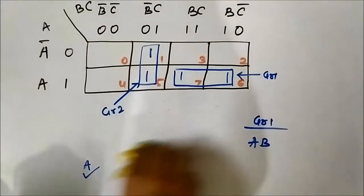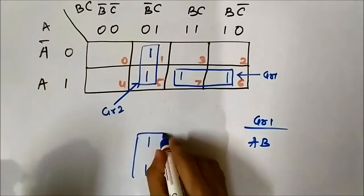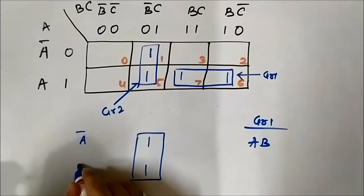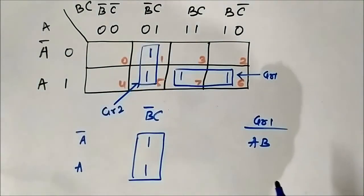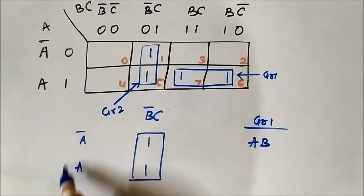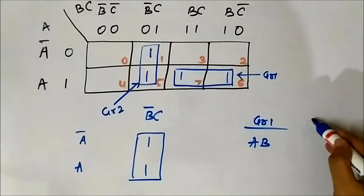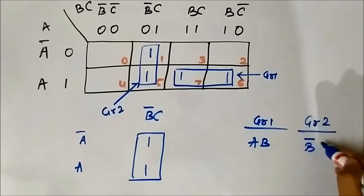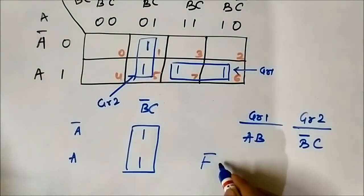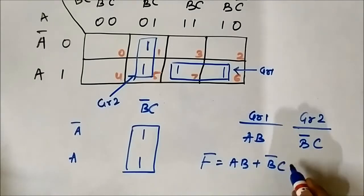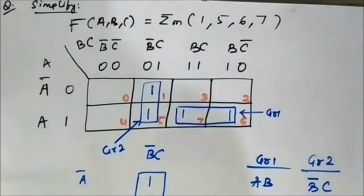Then we have Group 2. In Group 2 we have A complement and A in the horizontal side — nothing common horizontally. But in the vertical side we have B complement C common in both cells. So Group 2 has B complement C as common. The simplified Boolean expression is F = AB + B'C. This is the simplified Boolean expression of this given 3-variable Boolean expression.